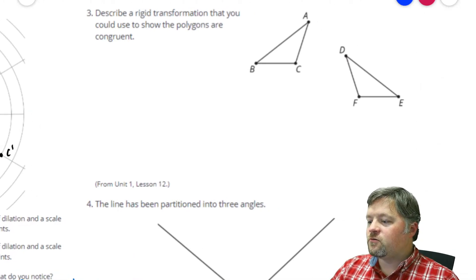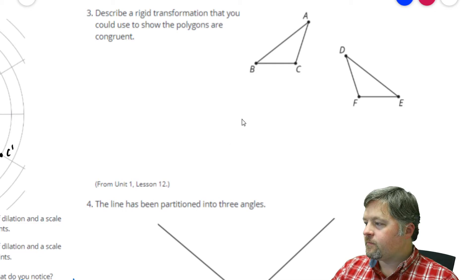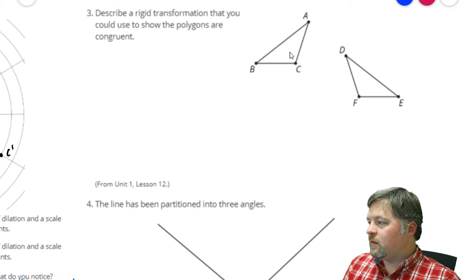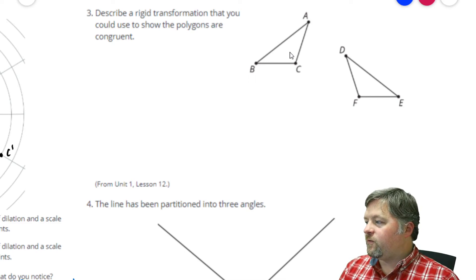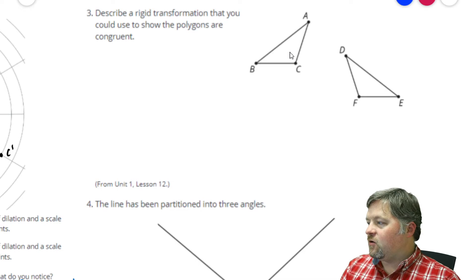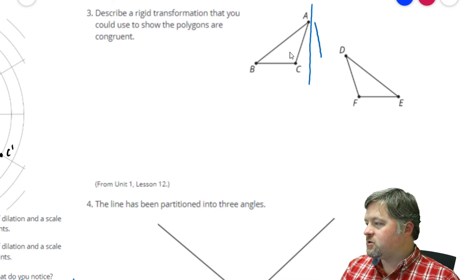Describe a rigid transformation that you could use to show polygons are congruent. Okay, the first thing I would do is reflect triangle ABC over a vertical line. You could do the vertical line through A. It doesn't really matter that much. A prime. B prime. C prime.